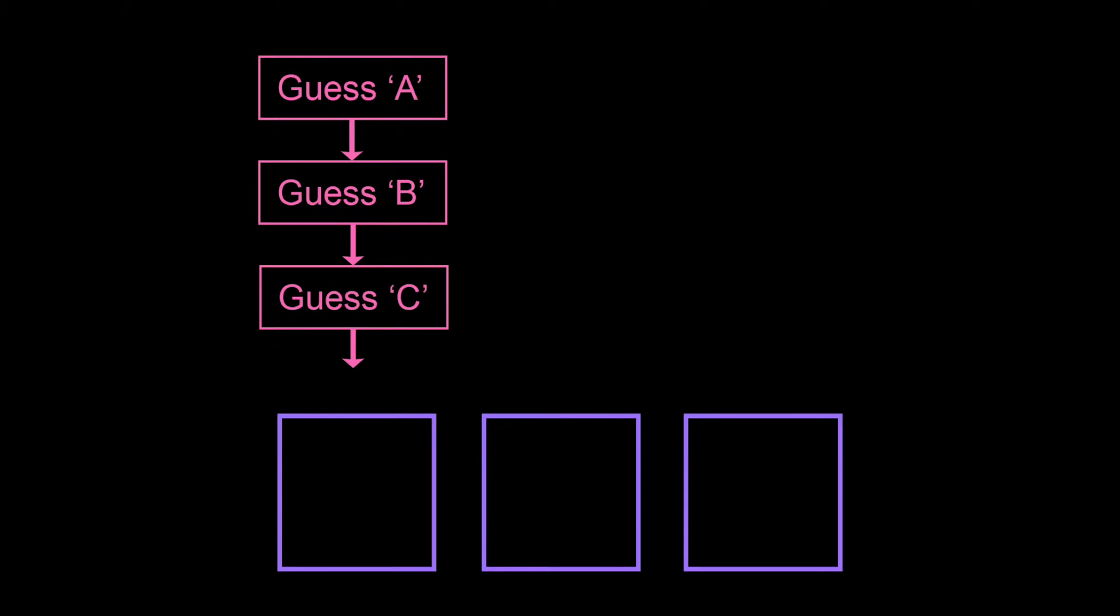One approach might be to just guess all of the letters in alphabetical order, so you start by guessing A, then you guess B, then you guess C, and so on until you get the full word.